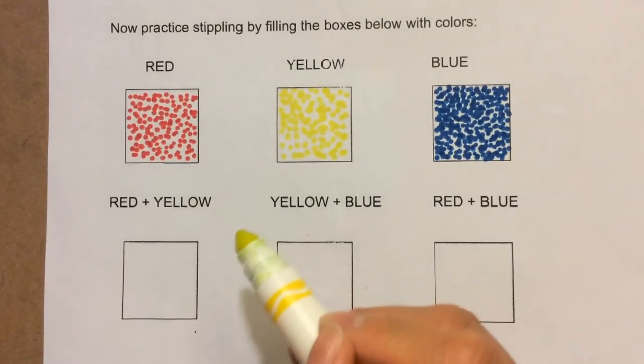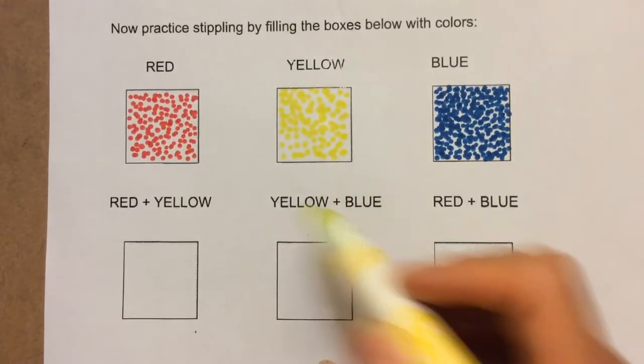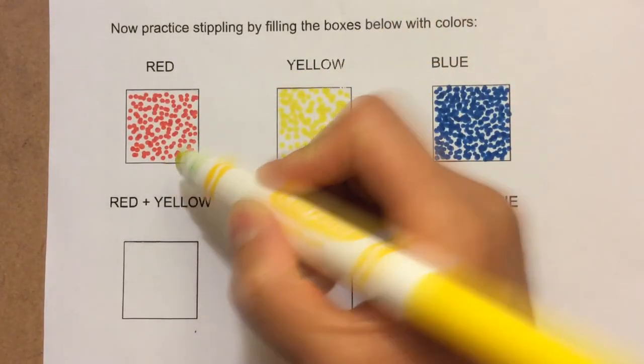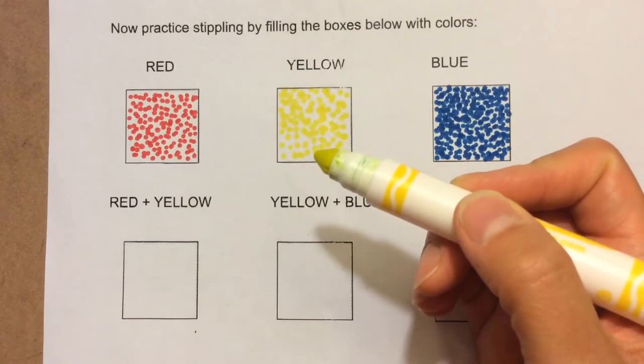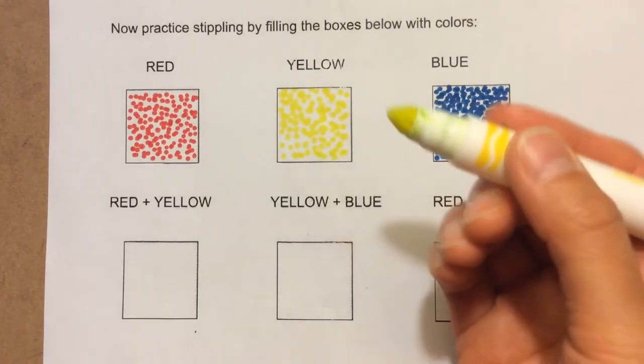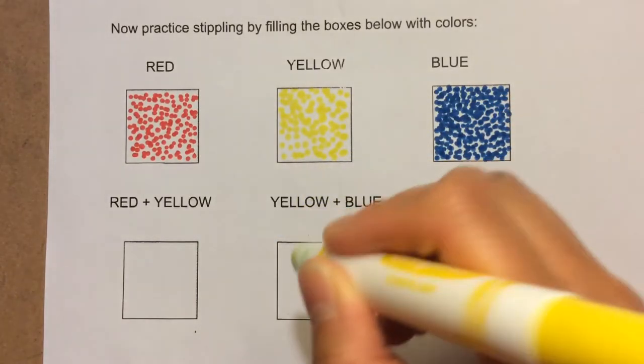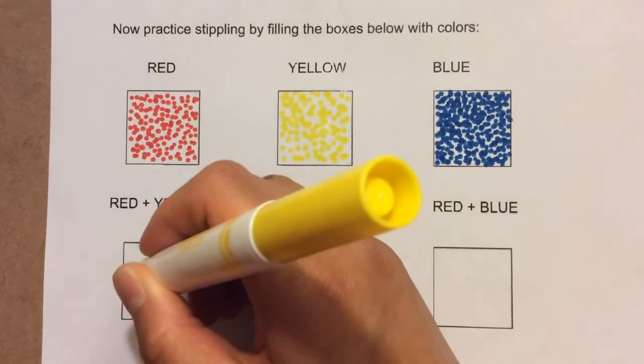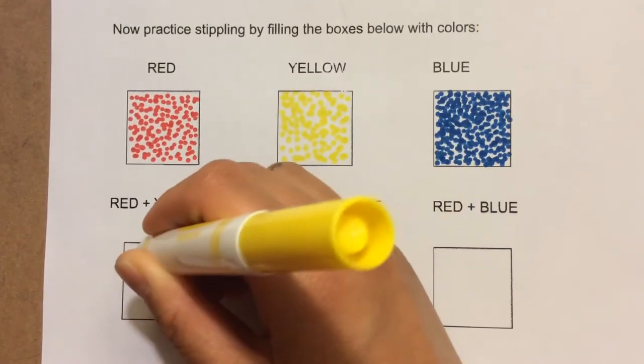I'm actually going to use my yellow marker first because if I put my red dots first and then put yellow over it, I might get red color on my yellow marker and that might affect my yellow color the next time that I put the yellow marker down. So just to be a little safe, I'll start with the yellow marker.